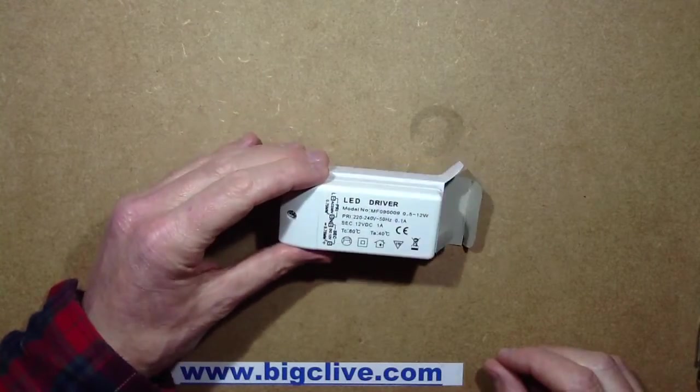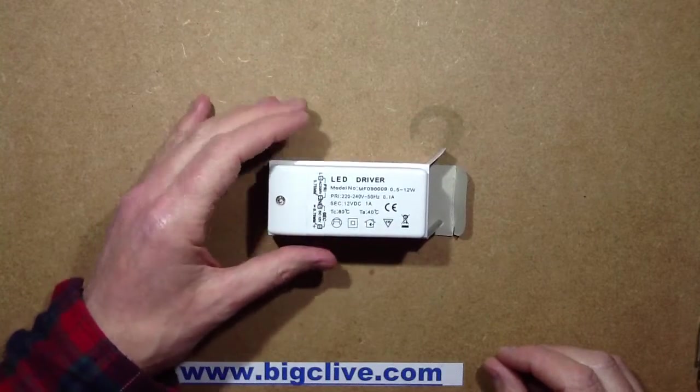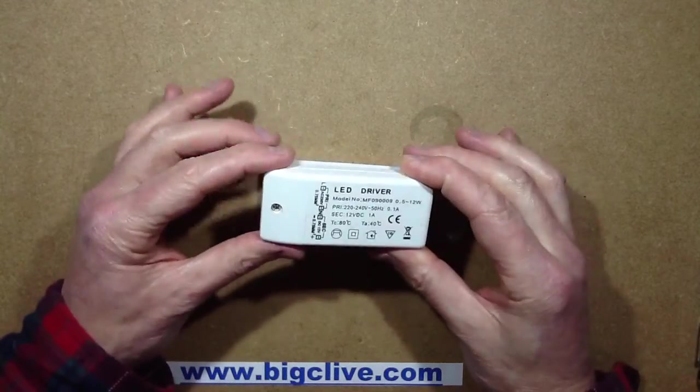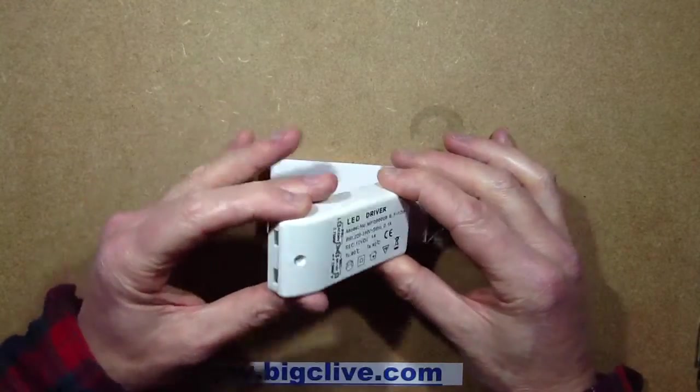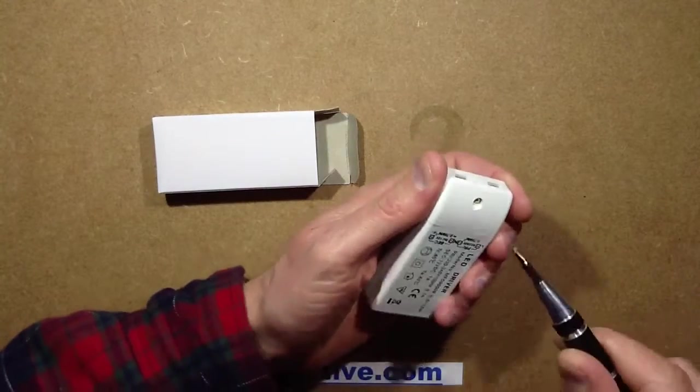I've taken both other supplies to bits, I might as well take the 12 watt one to bits as well. So this is a 12 volt DC power supply that puts out 1 amp for driving things like LED strip and LED lamps.